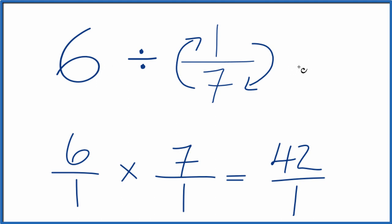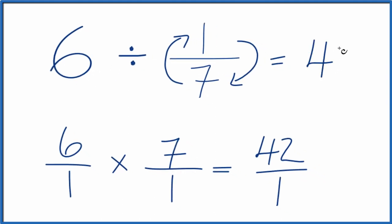So 6 divided by 1/7, that equals 42. If you multiply 42 by 1/7, you'll get 6.